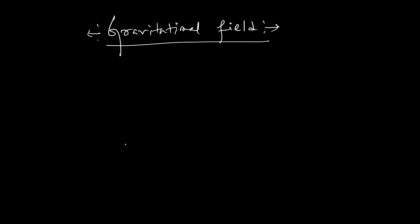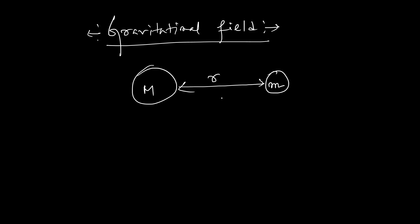In the case of the gravitational field, every object in our universe attracts every other object. Whenever an object is placed at a particular distance — suppose there is an object having a mass of capital M — you are placing another object having a mass of small m, and when they are placed at a particular distance r, the force of gravitation is working on that. The force experienced by unit mass placed in that gravitational field is what we call the gravitational field of mass M.